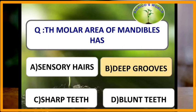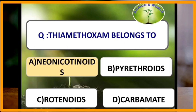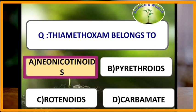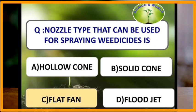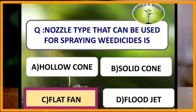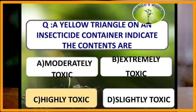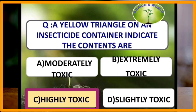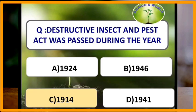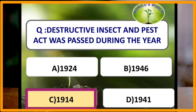The molar area of mandibles has deep grooves. Thiamethoxam belongs to the insecticide class neonicotinoids. The nozzle type that can be used for spraying weedicides is flat fan type. A yellow triangle on an insecticide container indicates that the contents are highly toxic, whereas red indicates extremely toxic, blue indicates moderately toxic, and green indicates less toxic.